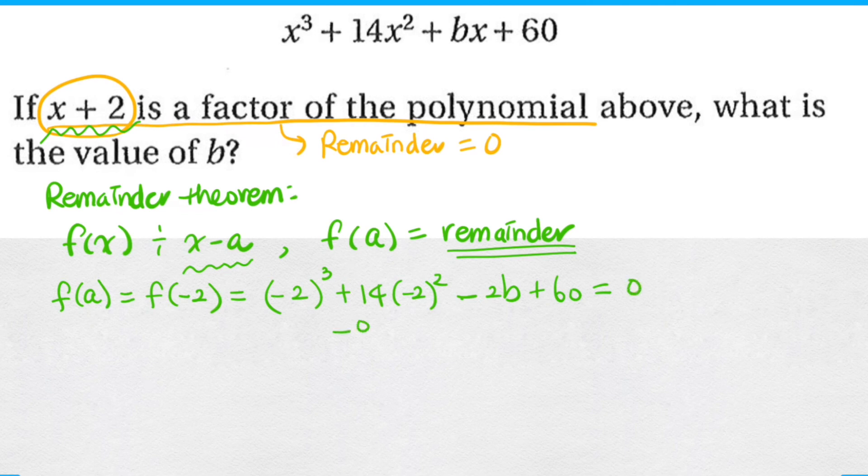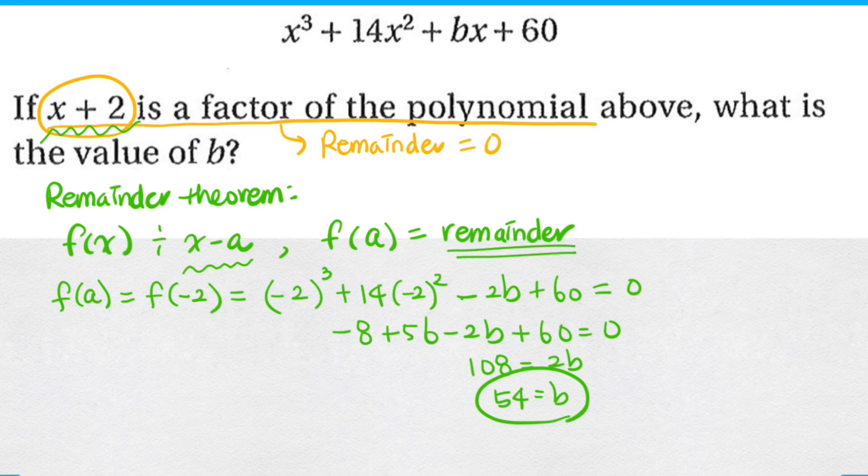Now when you simplify this, you should be left with one unknown variable, which is b in this case, and that's what you wanted to solve for. So using the remainder theorem, you get 54 as the value of b.